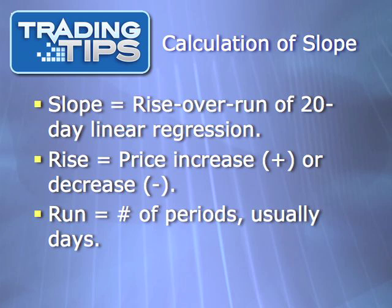Slope is the rise over run of a 20-day linear regression, with rise referring to the price change and run referring to time. For example, a $1 price increase over three days would have a slope of 1 over 3, or one-third. An $8 price decrease over the course of four days would have a slope of negative 8 over 4, which could be simplified to negative 2, as negative 8 over 4 is the equivalent of negative 2 over 1, or simply negative 2.